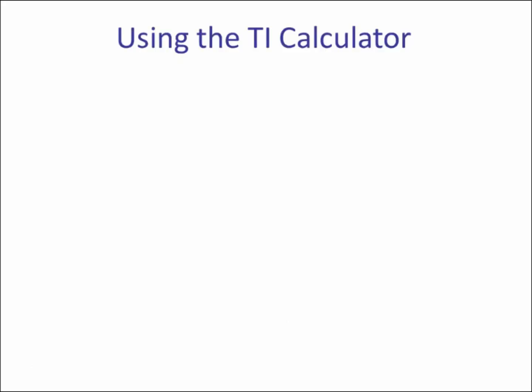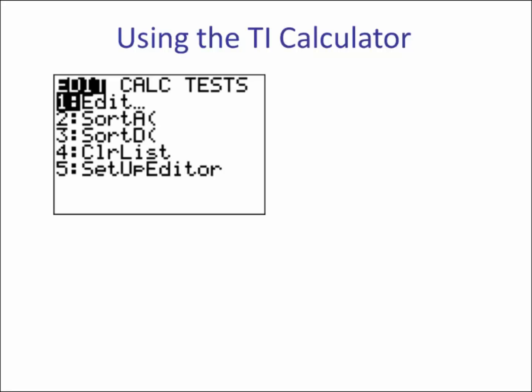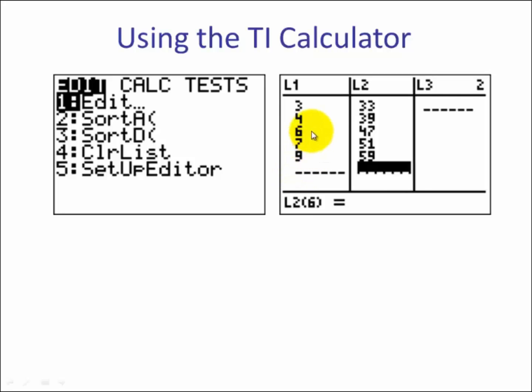Now let's quickly review how to use the TI calculator to graph scatter plots. So using this example, the first thing that we want to do is hit the stat button. Your screen should look like this. We're in edit, so you hit enter. Enter in the data. For this example, t will be in list one. p will be in list two.